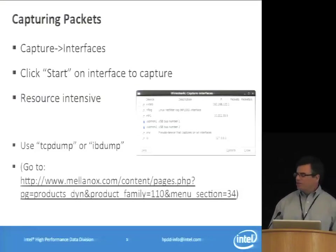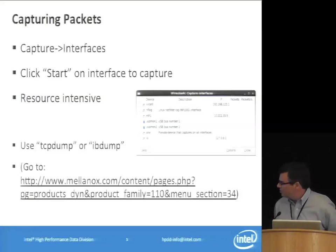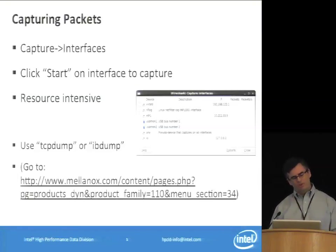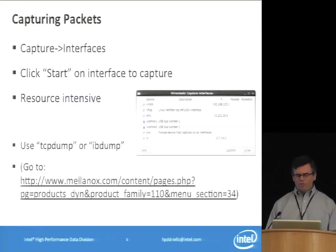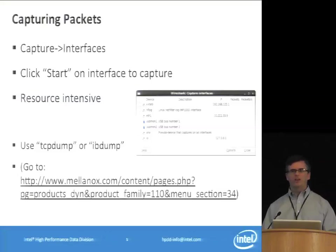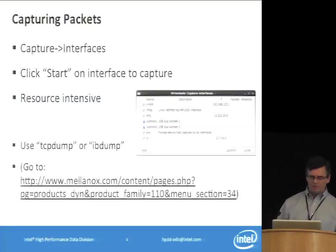To capture packets with Wireshark, go under the Capture pop-down menu and choose Interfaces. You'll get a pop-up window showing all the interfaces found on your box. Check off the ones you want to capture on, click Start, do whatever you're going to do, then click Stop. The problem with Wireshark is it tends to be very resource intensive while capturing. I'd recommend using command line tools like TCP dump to capture on your target and copy the PCAP file to your PC for decoding.